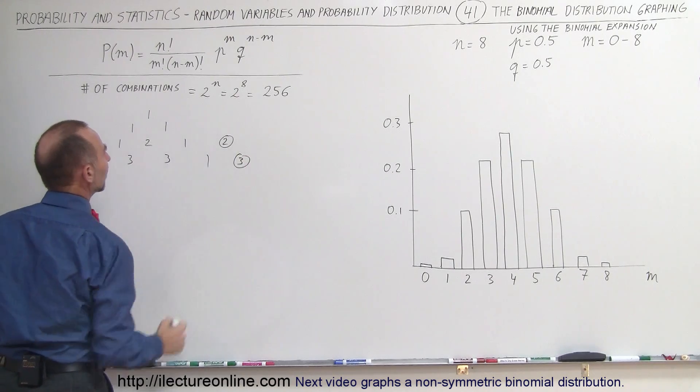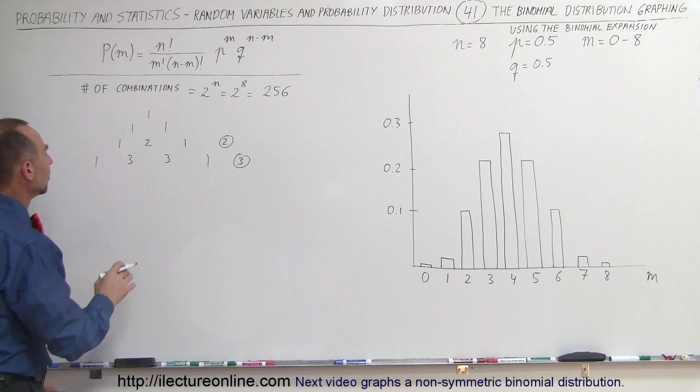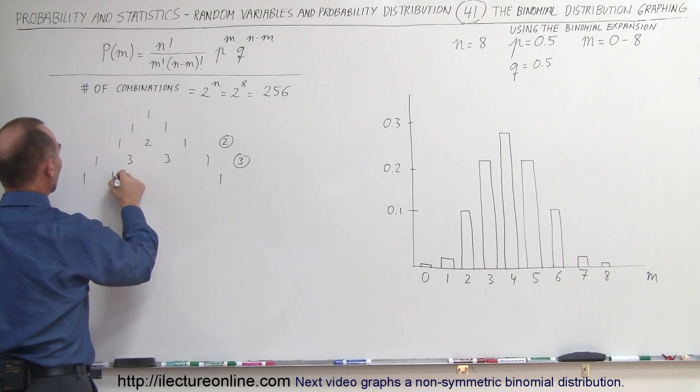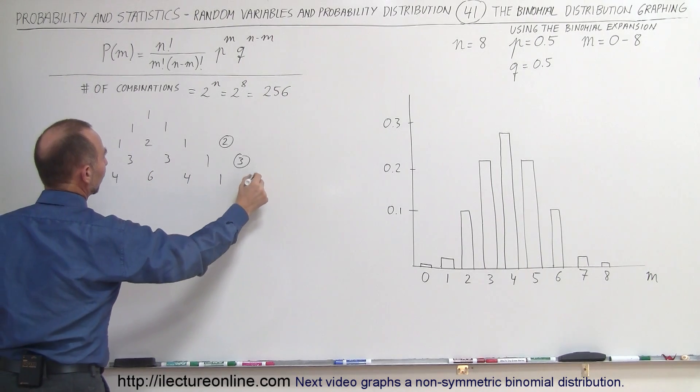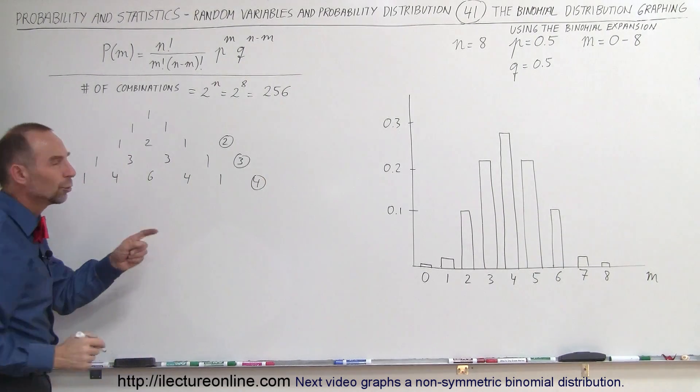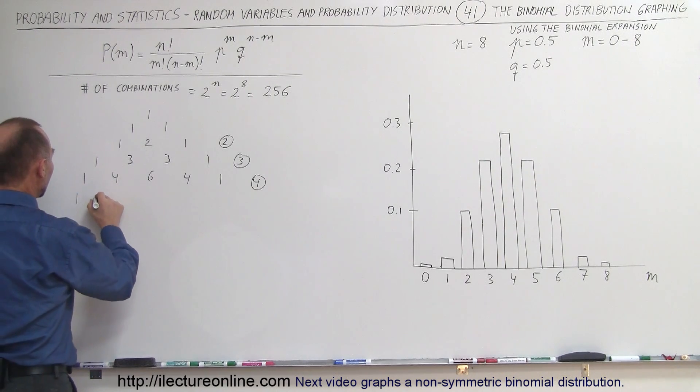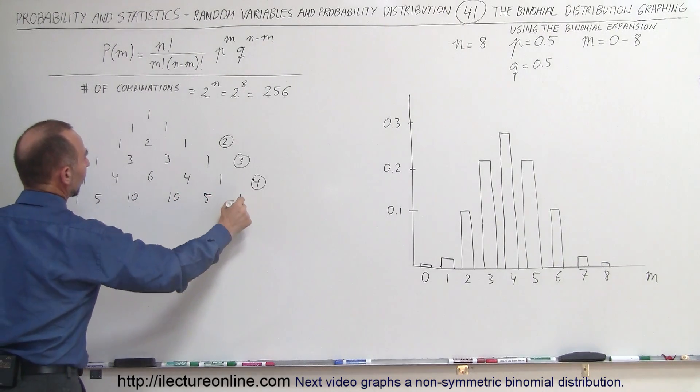So we continue doing this. We bring the 1 out here, the 1 out there. So 1 plus 3 is 4. 3 plus 3 is 6. 3 plus 1 is 4. And that's for 4 trials. We need to get all the way up to 8 trials, of course. So 1, we have 5. 4 plus 6 is 10. 10, 5, and 1. That's for 5 trials.